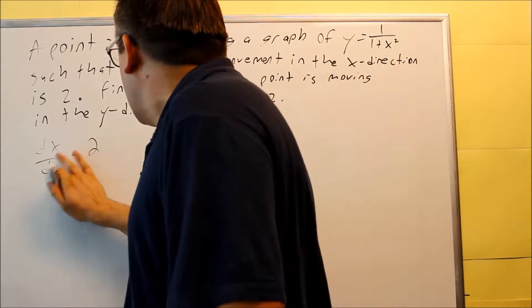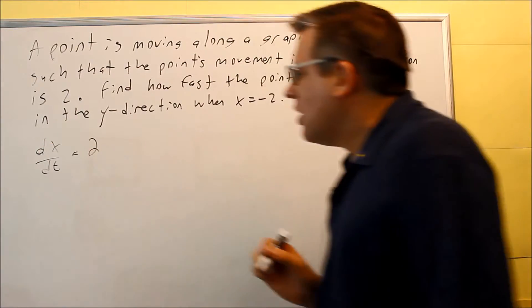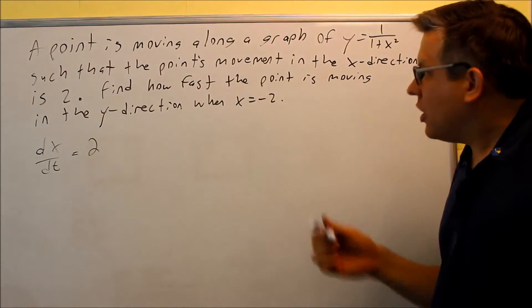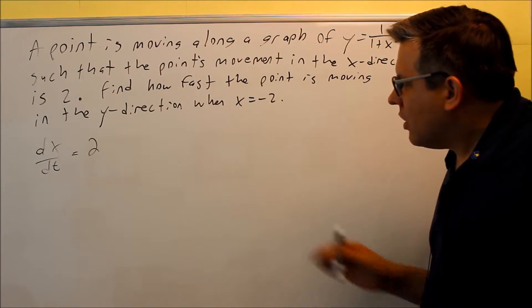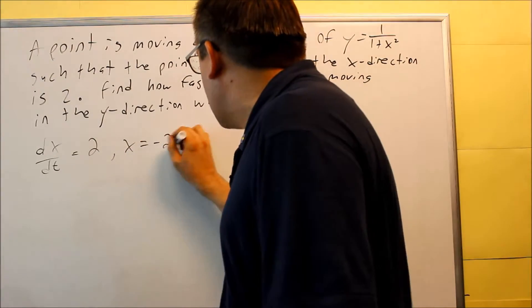In this case there's no units given, but we know that this is going to be dx/dt—that's what they're telling us. dx/dt is 2. That's basically a rate; that's the movement in the x-direction is 2. We also notice that x equals -2 here, so that's another variable that's given.